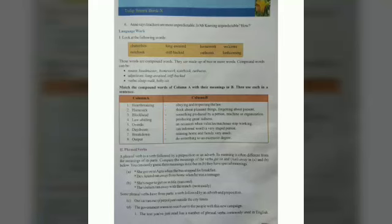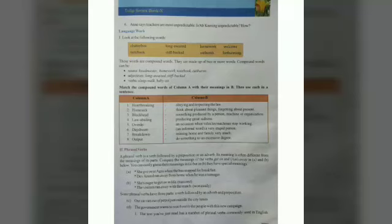Now we have to match the words in column A with the meanings in column B. The first one is 'heartbreaking' — it's a compound word. Heartbreaking means producing great sadness — dil ko tornay wali. Next, 'homesick' means someone who misses home and family very much — aik aisa insaan jis ko ghar ki bahut zyada yaad aati ho.